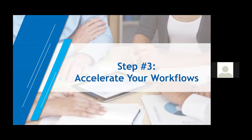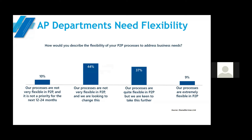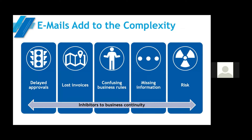Step three is to accelerate your workflows by eliminating the practice of emailing invoices for real-time automated workflow capability. Organizations need flexibility in their P2P process. The emailing of invoices around the company does not provide that flexibility — it inhibits continuity of the process. Using emails instead of automated workflows adds complexity to automating the AP process. Using emails to route invoices is risky: it can lengthen the approval and review cycle, not contain much-needed information, create confusing business rules, and ultimately contribute to the loss of invoices.